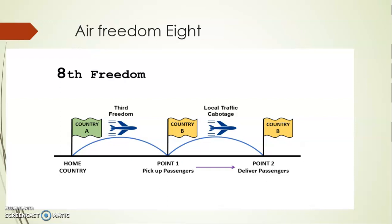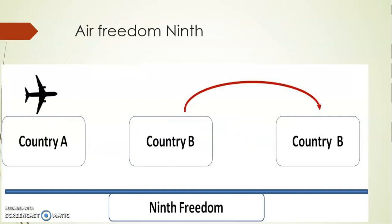The Ninth Air Freedom is an extension of the Eighth. Here the home country does not connect at all. A national carrier of any country can operate seamlessly between two parts of another country without connecting to its home country. For example, Air France could operate flights entirely within India — between two Indian cities — without going to France. Similarly, Indian airlines could operate within France. This is the Ninth Air Freedom.